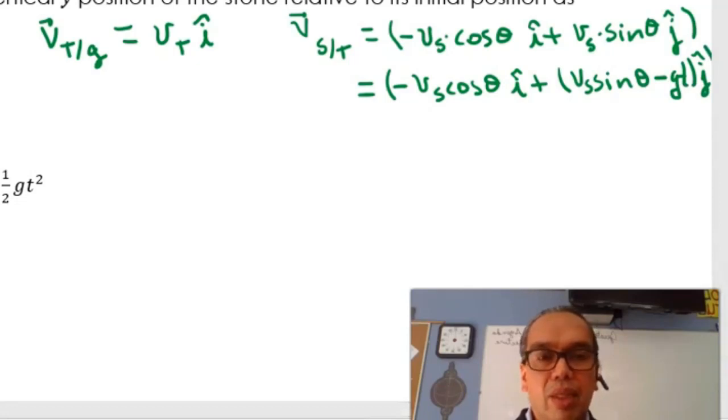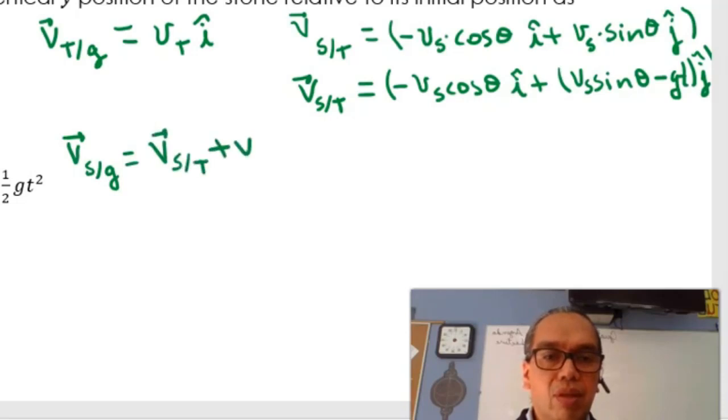Now, given that this is the velocity of the stone relative to the train, then the velocity of the stone relative to the ground is equal to the vector addition: velocity of the stone relative to the train plus velocity of the train relative to the ground.